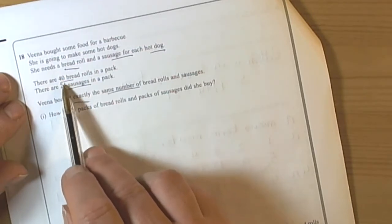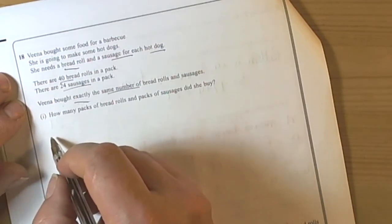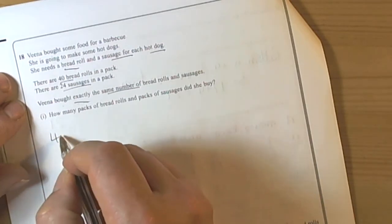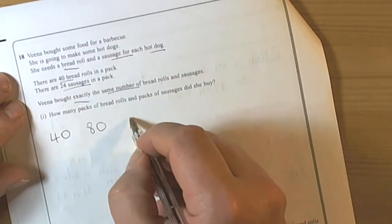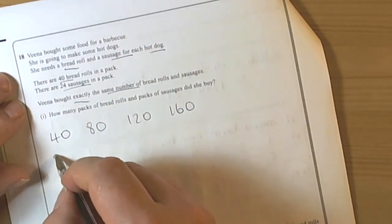So we're looking here at doing the lowest common multiple. One of the ways of doing that is to write out the 40 times table. So 40, 80, 120, 160 and write out the 24 times table.